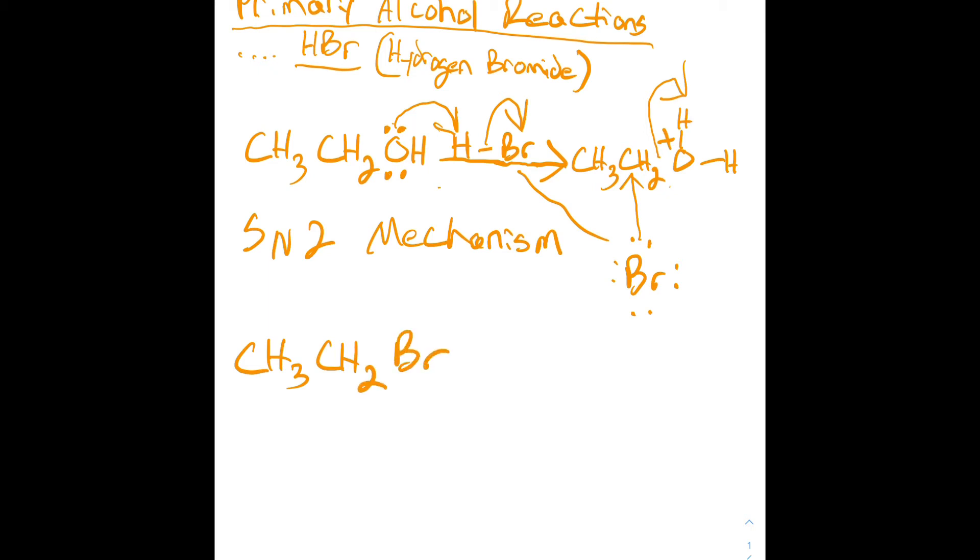It's something that you can remember: if you see a primary alcohol, the alcohol is going to be replaced with the bromine, but if you have to show the mechanism on the test, this is it.